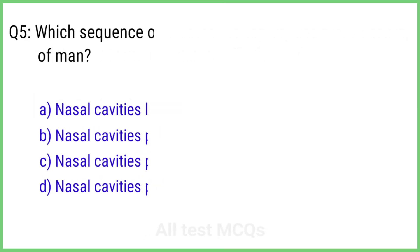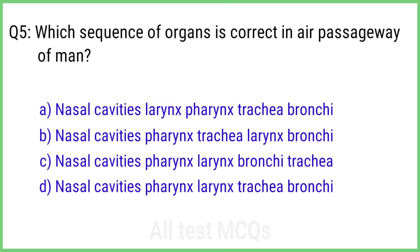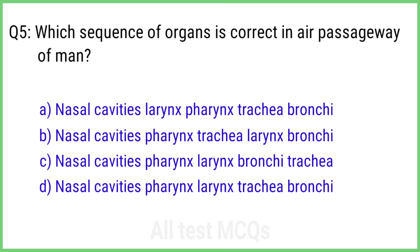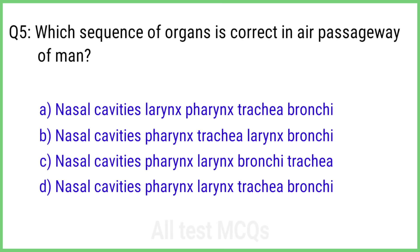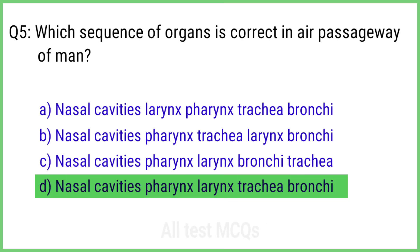Question 5. Which sequence of organs is correct in the air passageway of men? The right answer is option D: Nasal cavity, pharynx, larynx, trachea, bronchi.